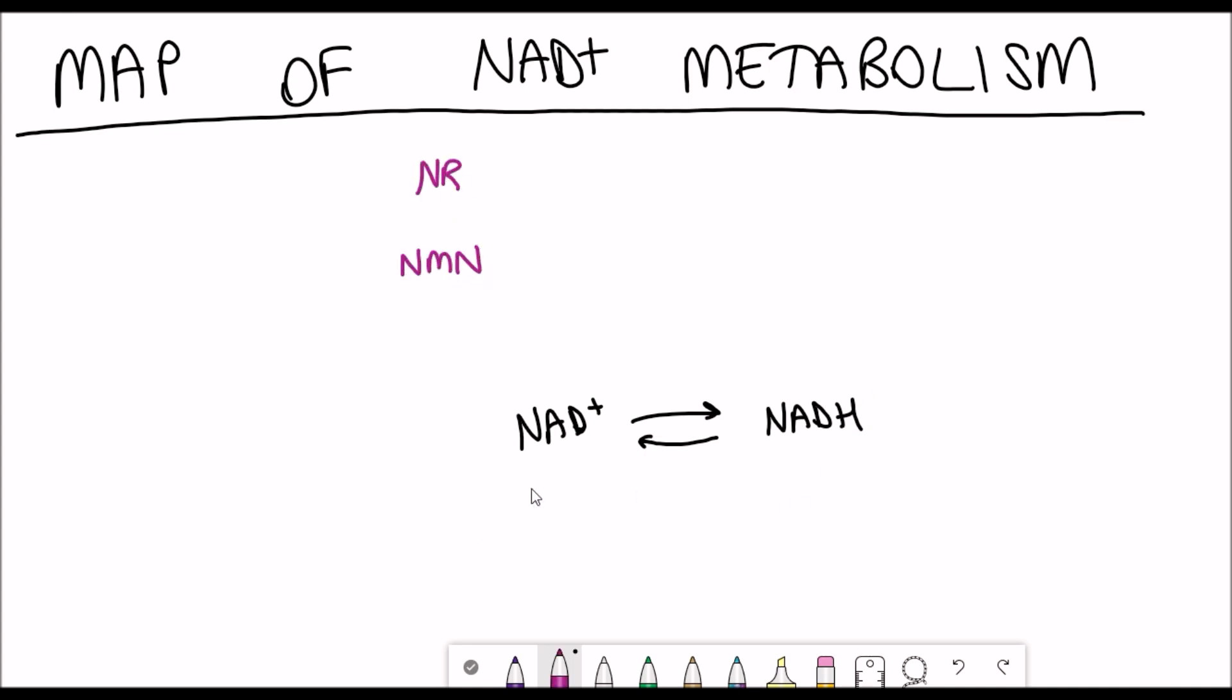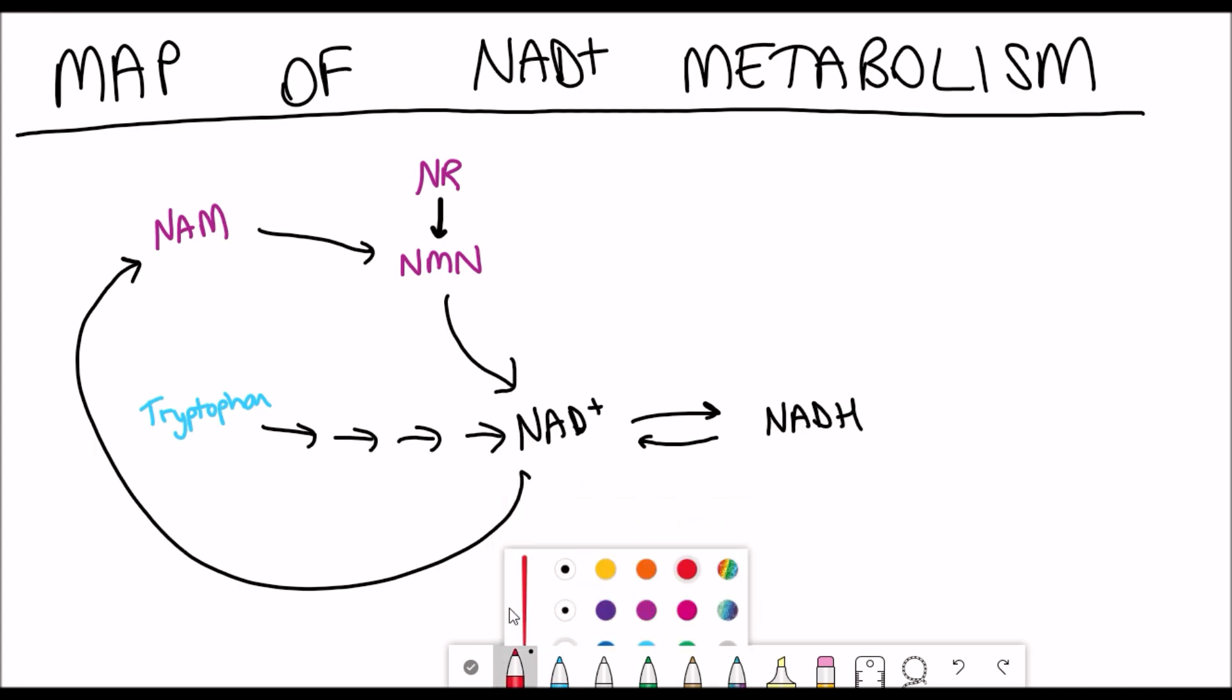NAD plus stands for nicotinamide adenine dinucleotide and in the cell it's regularly converted between its oxidized form and NADH which is its reduced form. Two precursors, NR nicotinamide riboside and NMN nicotinamide mononucleotide, are upstream of NAD plus. In addition, NAD plus can also be salvaged from tryptophan in the cell. NAD plus is used up in a variety of reactions within the cell, mainly regulated through sirtuins and PARP enzymes and also CD38, and that leads to the product NAM or nicotinamide, and that can then be converted back to NMN which can then regenerate NAD plus.